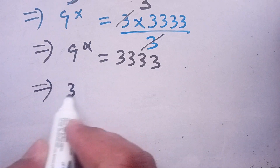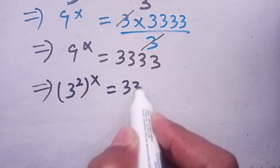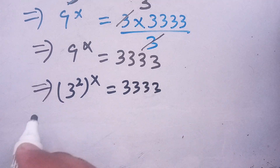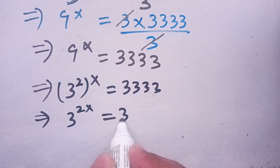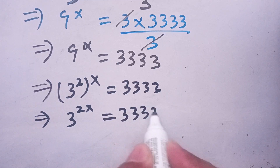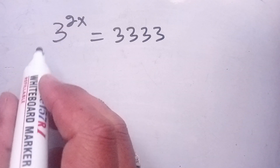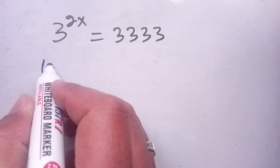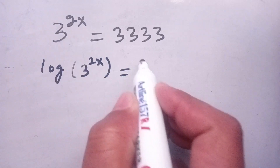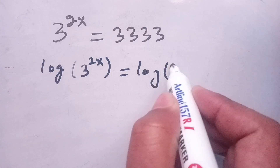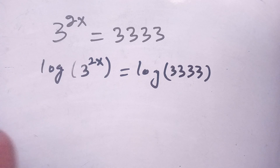Now, 9 can be written as 3 power 2, so we have 3 power 2 raised to the power x is equal to 3333, which gives us 3 power 2x is equal to 3333.